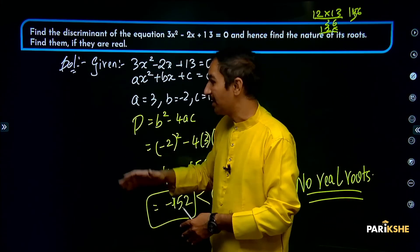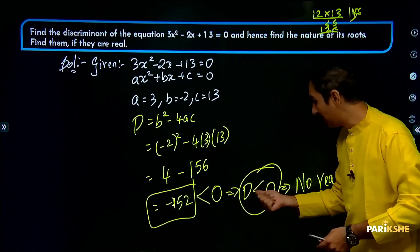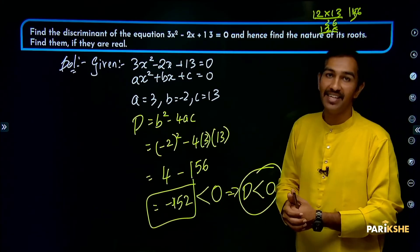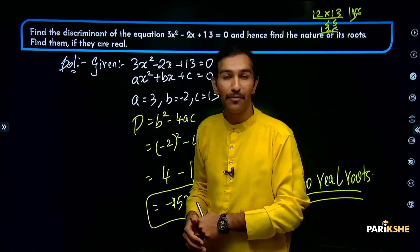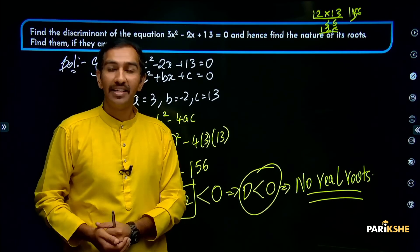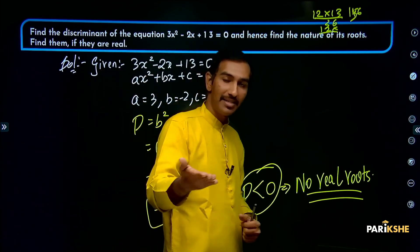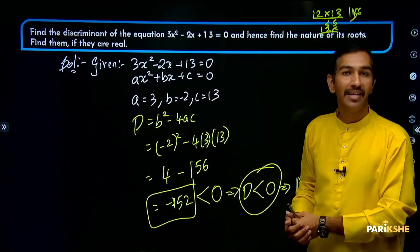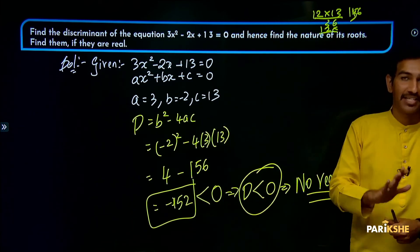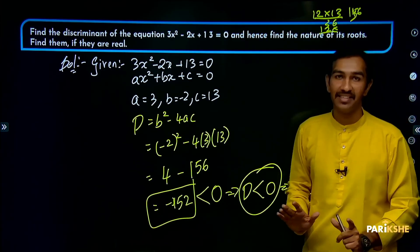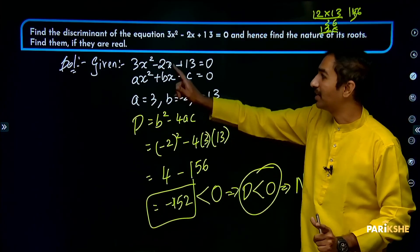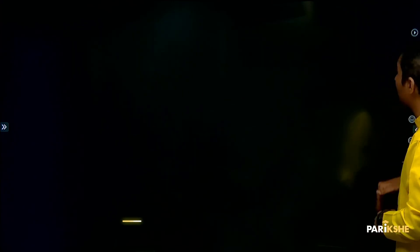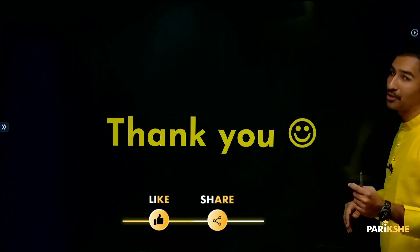Since the roots are not real, no need to find the roots. If D equals 0 or D greater than 0, then the roots are real, and we would find them using factorization, formula method, or completing the square method. This concludes the topic of Discriminant and Nature of the Roots.